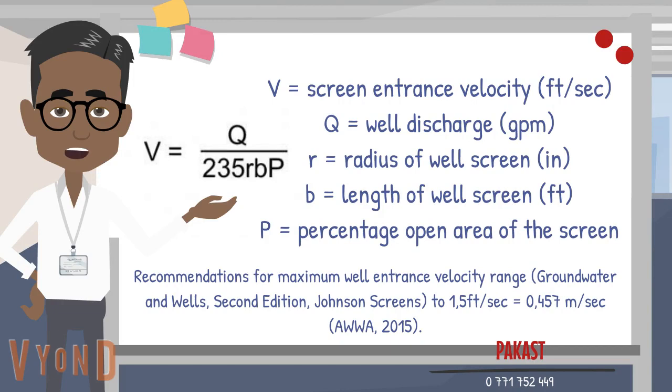Recommendations for maximum well entrance velocity range, from Groundwater and Wells, second edition, Johnson Screens, is up to 1.5 feet per second.